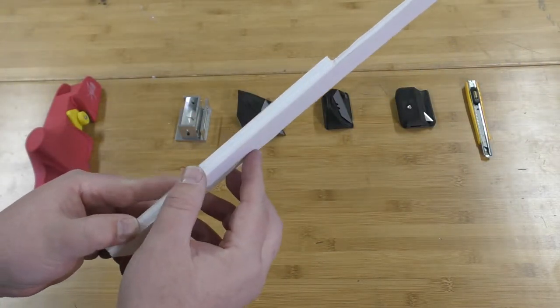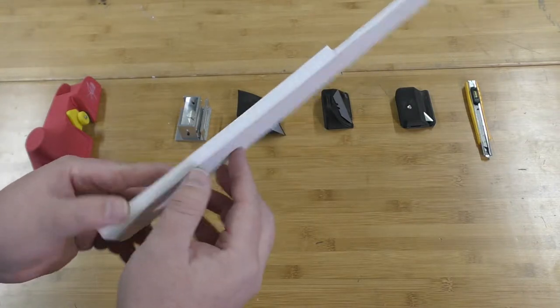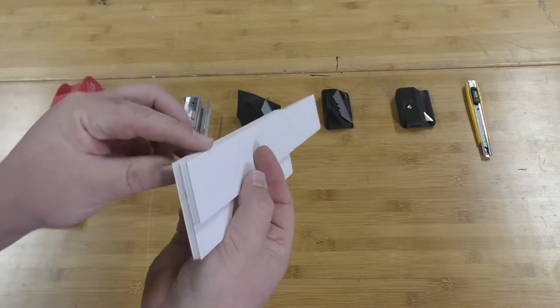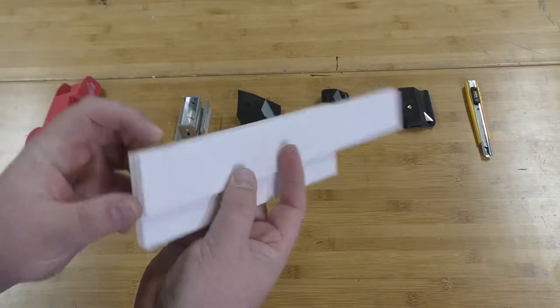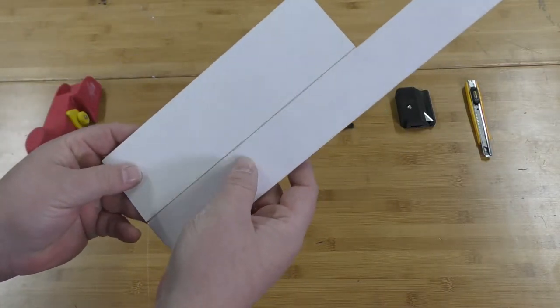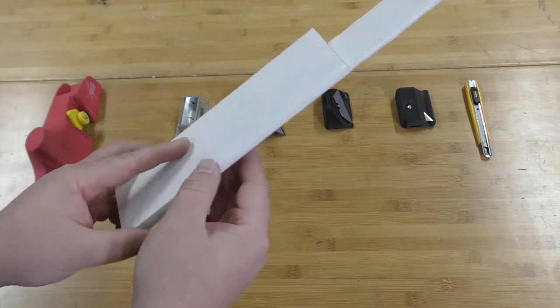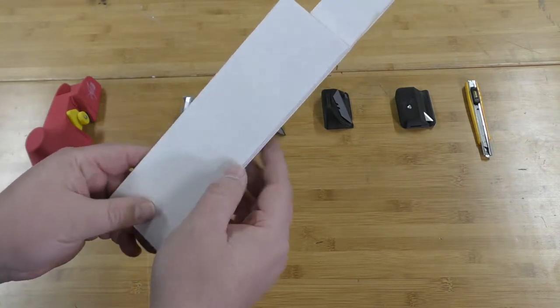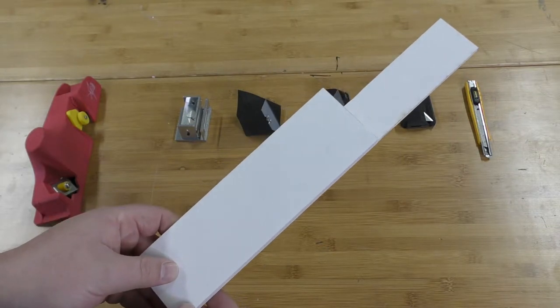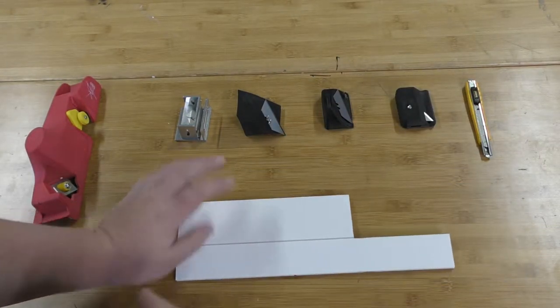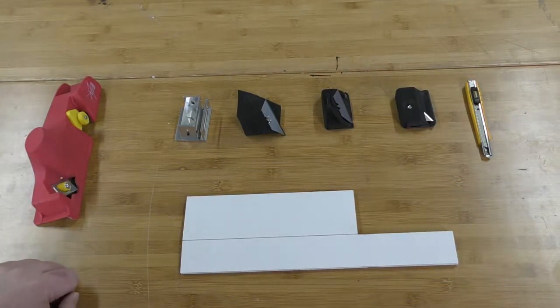The goals are, the hopes are if we do a double bevel on this not to cut through that paper hinge that exists. Other hopes that we've got is the ability to have nice clean consistent cuts. So let's go ahead and dive in and we'll start stress testing these various products.